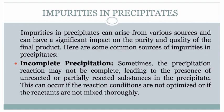Next is impurities in precipitates. Impurities in precipitates can arise from various sources and can have a significant impact on the purity and quality of the final product. Here are some common sources of impurities in precipitates. First, incomplete precipitation. Sometimes the precipitation reaction may not be complete, leading to the presence of unreacted or partially reacted substances in the precipitate. This can occur if the reaction conditions are not optimized or if the reactants are not mixed thoroughly.